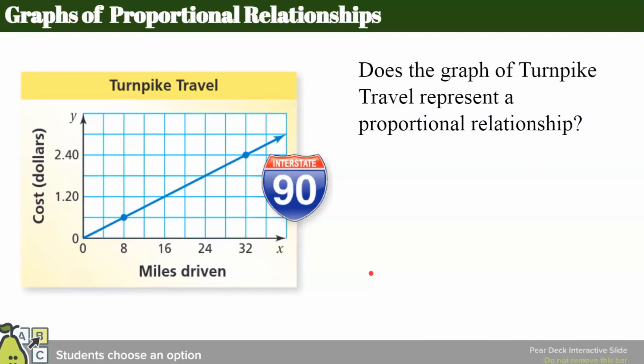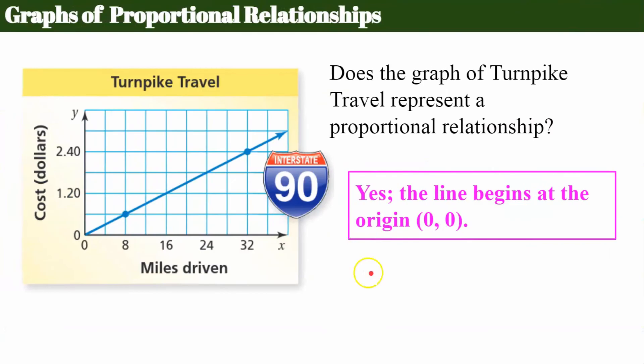Try this one. What do you think? Does the graph of turnpike travel represent a proportional relationship? The answer is yes. Since the line begins at (0,0), (0,0) is a point on the line. If I go zero miles, the turnpike cost is zero dollars. Therefore, this is a proportional relationship.